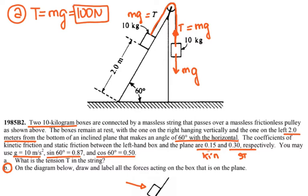Continuing with the forces: the tension on each side of the pulley is T. There is a force of gravity acting on the object on the incline. Because they have the same masses, those two forces should have the same length when drawn. There is also the normal force and the friction force. It is static friction because there is no sliding — the object on the right is effectively pulling the object on the left down the incline, so static friction acts.